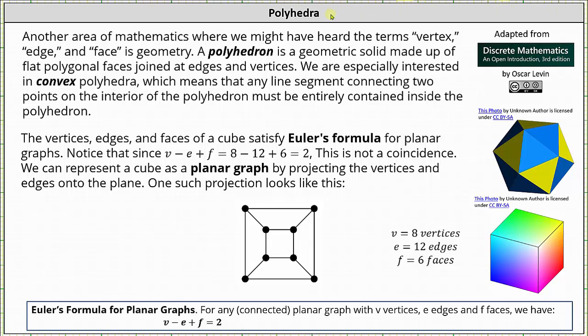Welcome to a lesson on polyhedra. Another area of mathematics where we might have heard the terms vertex, edge, and face is geometry. A polyhedron is a geometric solid made up of flat polygonal faces joined at edges and vertices.